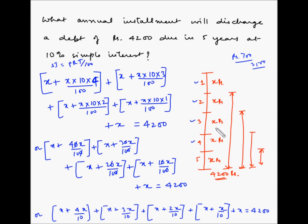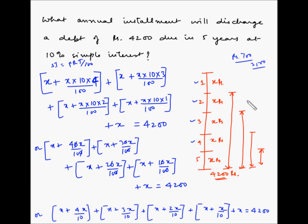The annual installment comes out to rupees 700. As a check: 700 × 5 = 3500, so we are paying 3500 in total installments and avoiding interest of 4200 − 3500 = 700 rupees. This avoided interest — equivalently what the bank can gain by depositing these installments at 10% — equals 700 rupees.